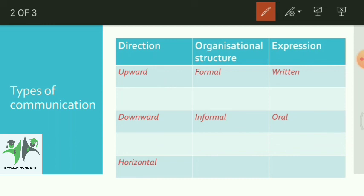Types - how many types are there? Communication is broadly three: direction, organizational structure, and expression. Direction will be upward, downward, and horizontal. Organizational structure will be formal and informal. Expression can be written or oral communication. Easy, simple.